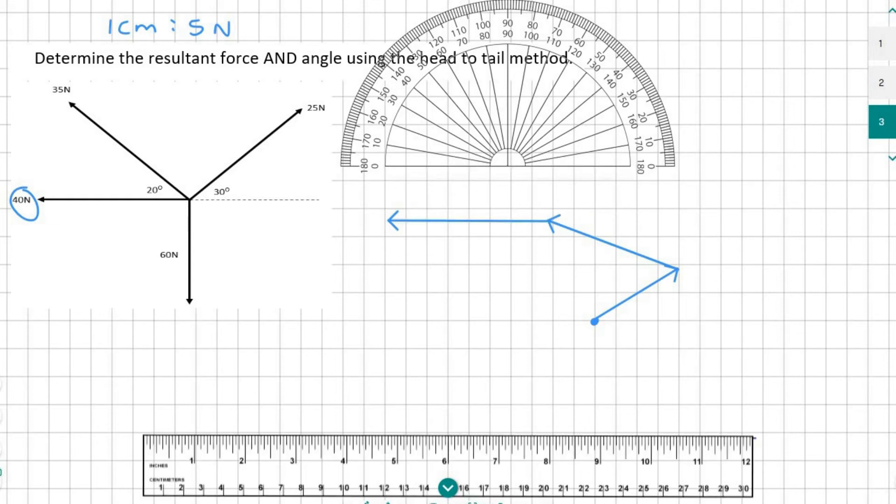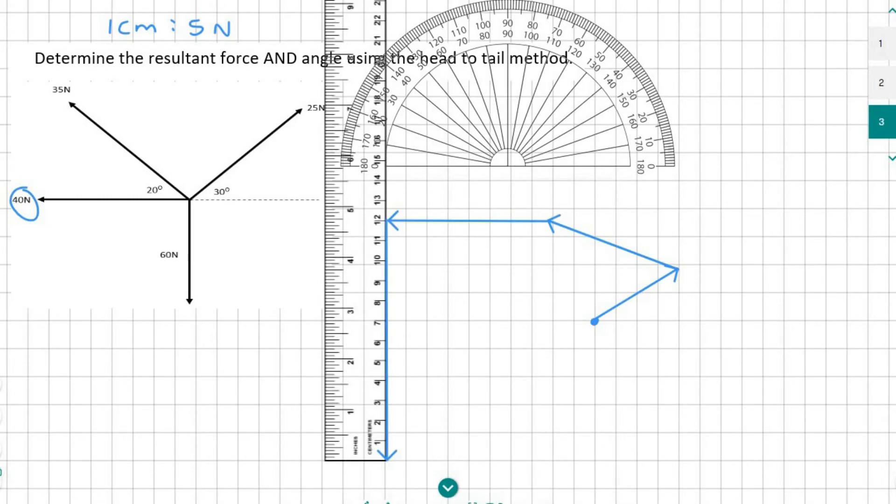And then lastly we have a 60 newton line. Now that's going to be 12 centimeters and it's going to go vertically down and so it should look something like that.